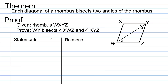The first theorem of this lesson: each diagonal of a rhombus bisects two angles of the rhombus. The diagonals of the rhombus bisect the angles in which they end up in. In this case, diagonal W-Y is going to bisect angle X-W-Z and angle X-Y-Z. In our proof, we're given that the quadrilateral is a rhombus, and we need to prove that segment W-Y bisects those angles.